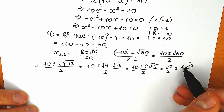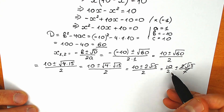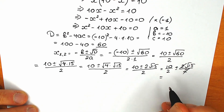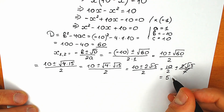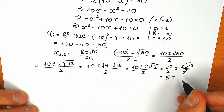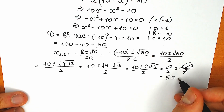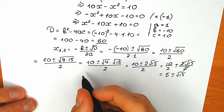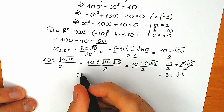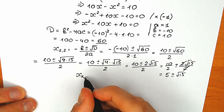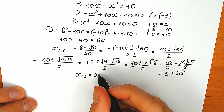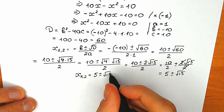We cancel the 2s, and right here we have 5. So as a result, x₁ and x₂ equal 5 plus or minus square root of 15. This is our x₁ and x₂.